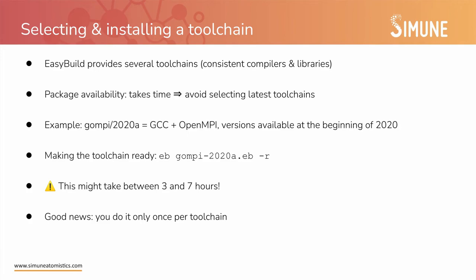EasyBuild provides toolchains — these are consistent sets of compilers and libraries, which is critical for reproducibility of the builds. Since when EasyBuild publishes a new version it takes time to produce these sets, I recommend avoiding the selection of the latest toolchain. What I usually do is use the toolchain from one year ago. For example, we could use the gompi 2020a toolchain, which means GCC with OpenMPI, published in the first half of 2020. To make the toolchain ready, you just type `eb gompi-2020a.eb -r`, and `-r` means recursive, so it will install everything it needs. Just one piece of advice: take your time — it is better to do it overnight because it can take between three and seven hours. The good news is that you have to do this only once per toolchain, so once or twice a year.